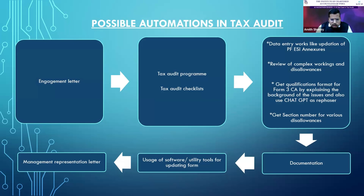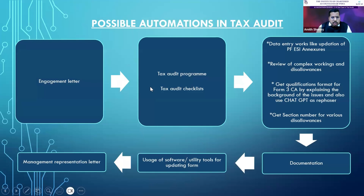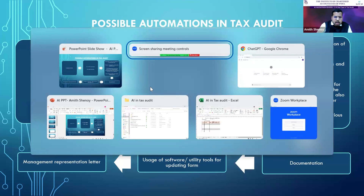Now I will give a live demonstration of how CA ChartGPT can be used to generate four things in one go: that is, the engagement letter, the tax audit program, the tax audit checklist, and the MRL — including the name of the assessee, the signing partner name, and each and everything.